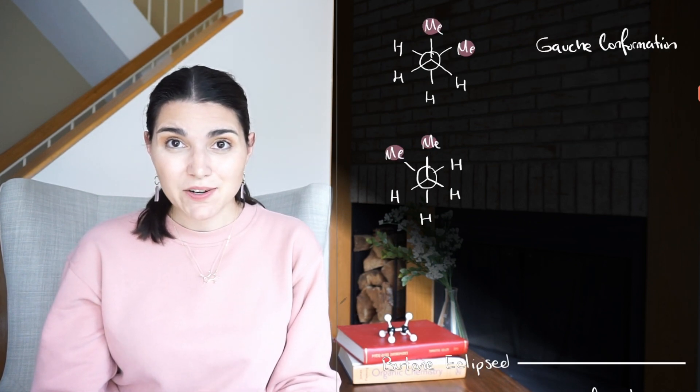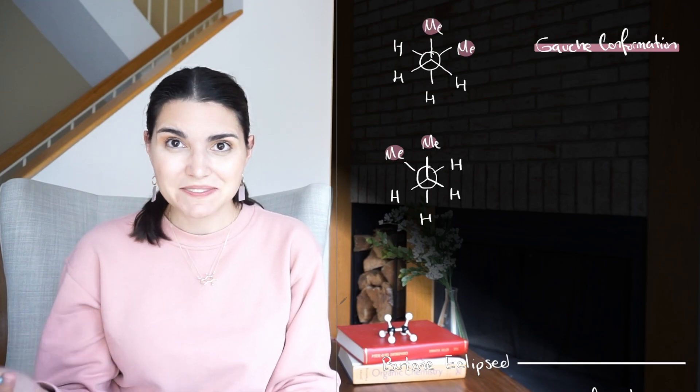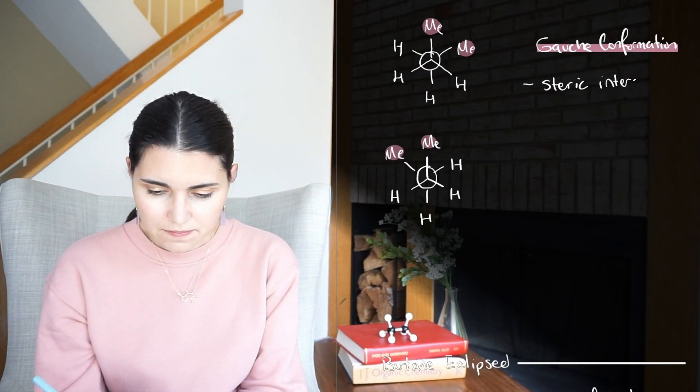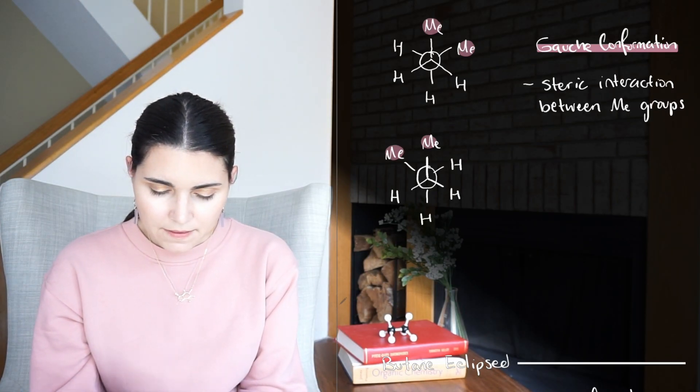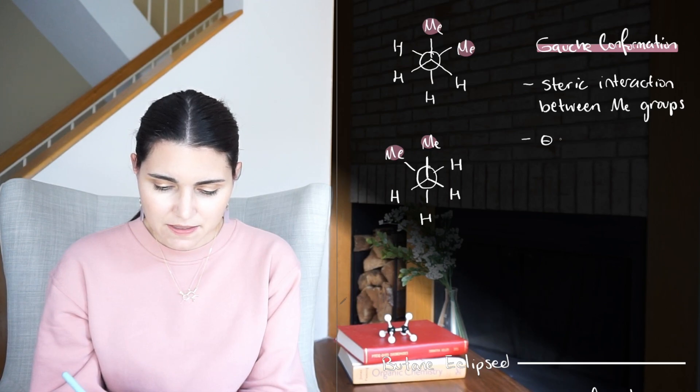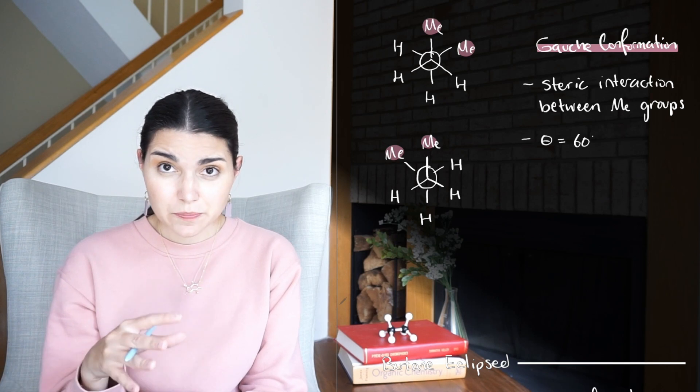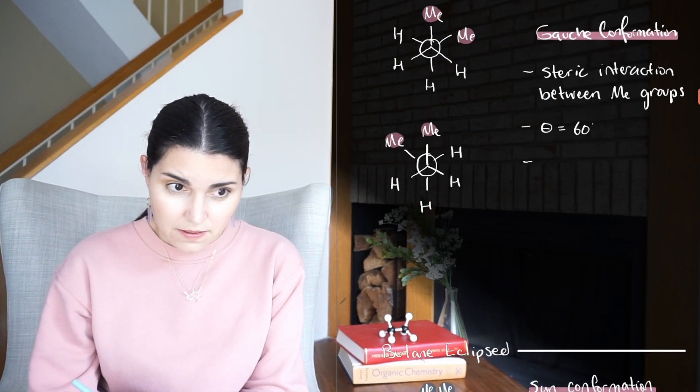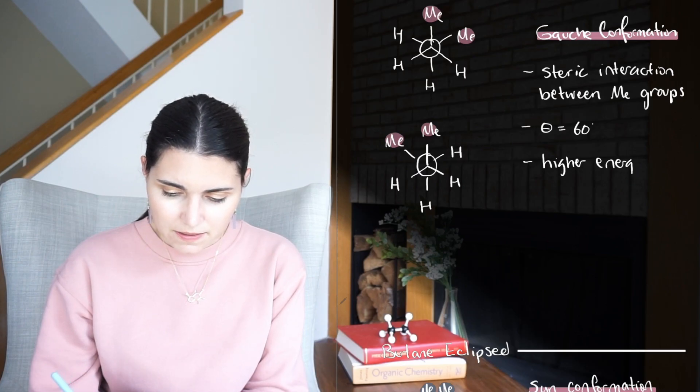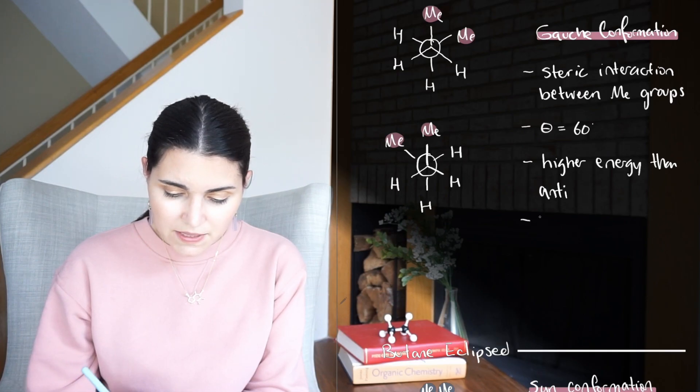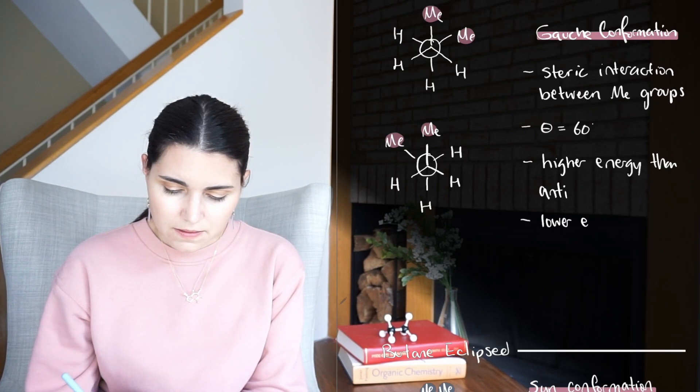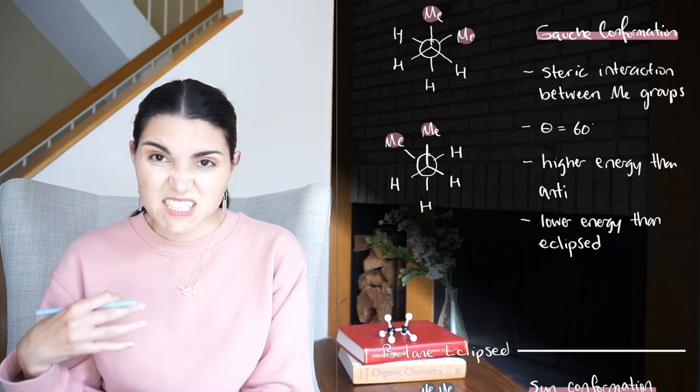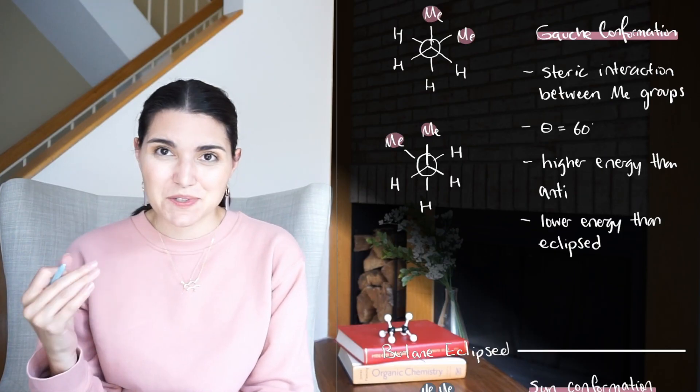The other possible staggered conformation for butane is the gauche conformation. Gauche means awkward in French, and that's because we have an awkward steric interaction between the methyl groups. The dihedral angle between those methyl groups is 60 degrees. Remember, methyl groups, it's a CH3. So we have two kind of bigger CH3 groups that are getting close together, and that adds energy to this molecule. So in the gauche conformation, it has higher energy than anti, but it still has lower energy than any of the eclipsed conformations. It just has that little awkward additional energy because the methyl groups are closer together, but it's still staggered.